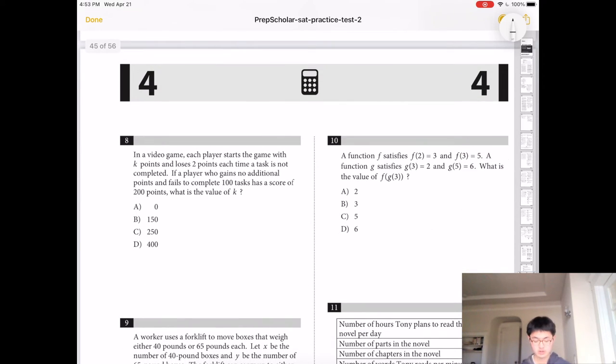Alright, number 8, starts off with k points, loses 2 points each time. So failed 2 points 100 times, so it's 200, but you still have 200 points left. So you have a total of 400 at the beginning.